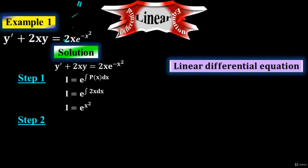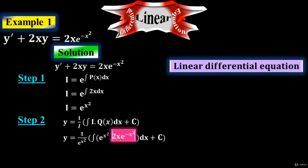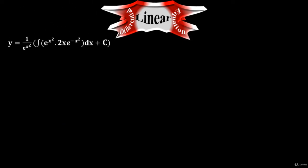Now step two: to find the general solution. The formula for the general solution is y equals to 1 over the integrating factor times the integral of the integrating factor times Q of x dx, plus c. Substitute the value of the integrating factor — whatever you got in step one, just substitute that value for i. The integrating factor value is e to the x squared. Q of x is obviously 2x times e to the minus x squared. So we have y equals to 1 over e to the x squared, times the integral of e to the x squared times 2x times e to the minus x squared dx, plus c.